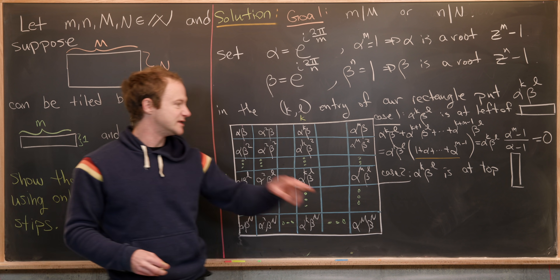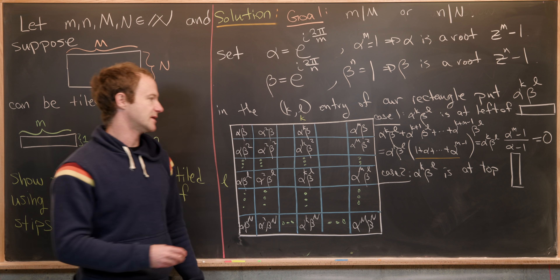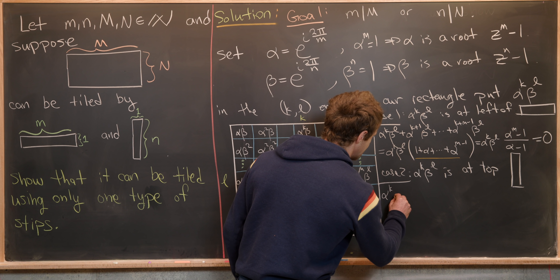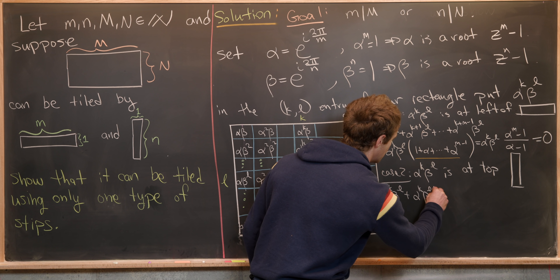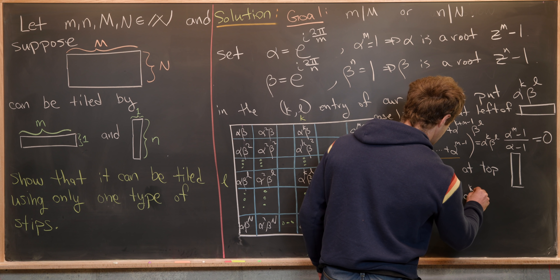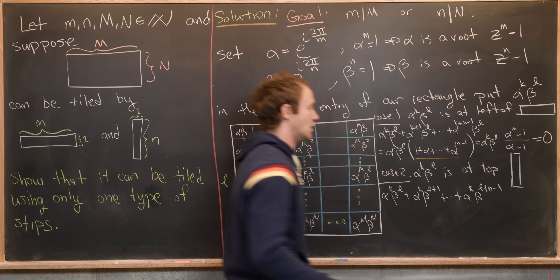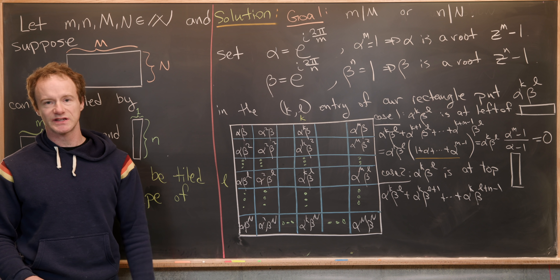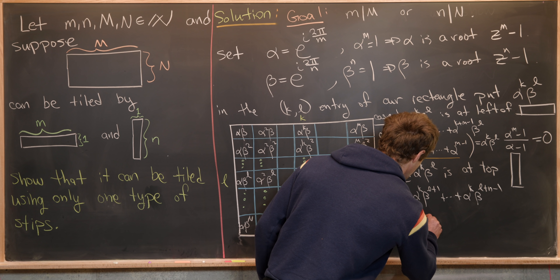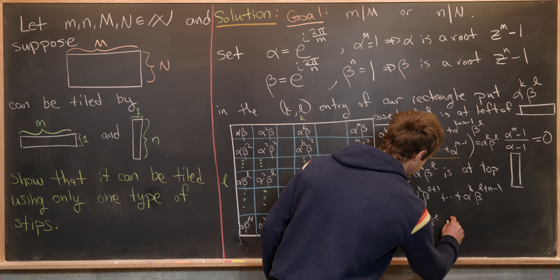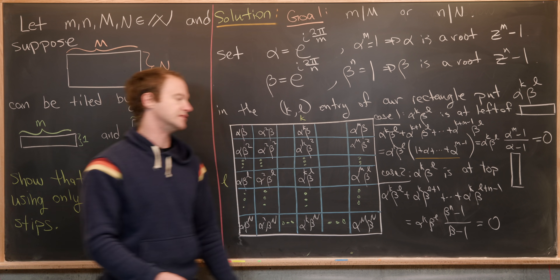Case two: alpha^k beta^l is at the top of a vertical strip. Summing down that strip gives alpha^k beta^l + alpha^k beta^(l+1) + ... + alpha^k beta^(l+n−1). By the same calculation, this equals alpha^k beta^l times (beta^n − 1)/(beta − 1), which is zero.